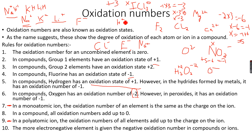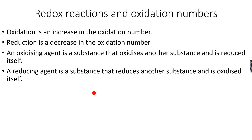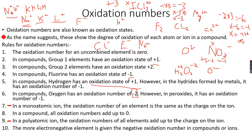Therefore, the oxidation state of iodine in ICl₃ is plus 3. That's how we figure out oxidation states. We have now covered all 10 golden rules for oxidation states — memorize them and you can never go wrong.